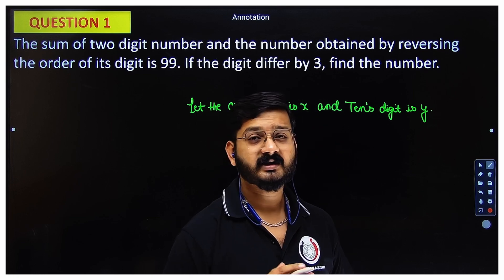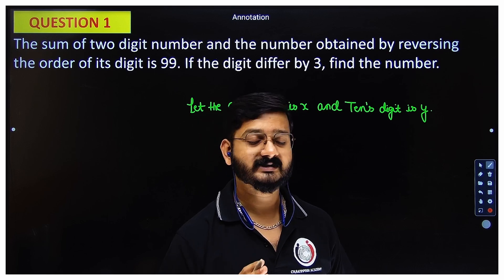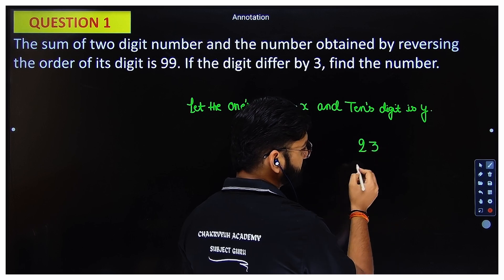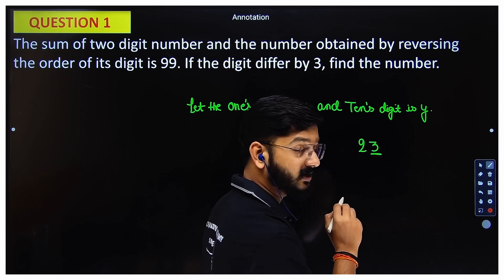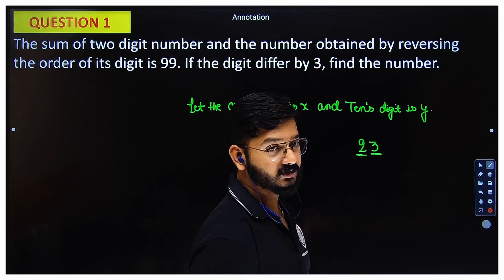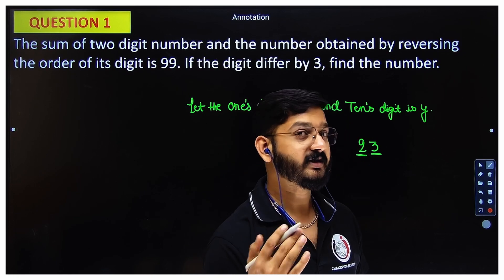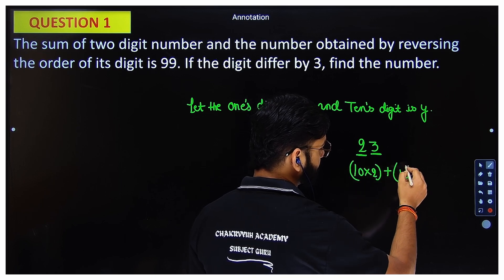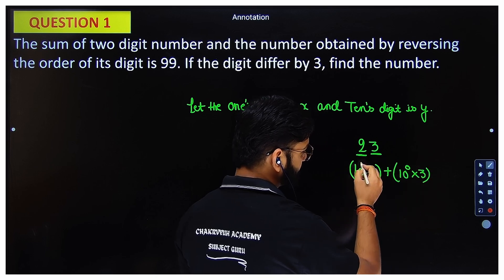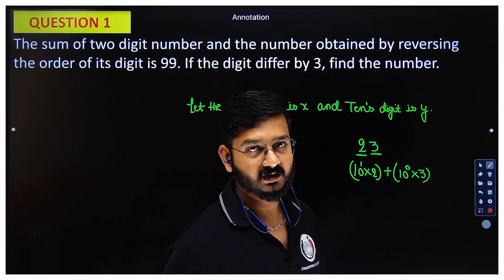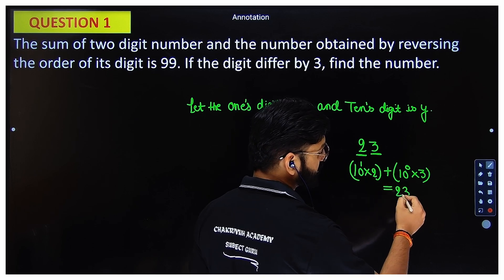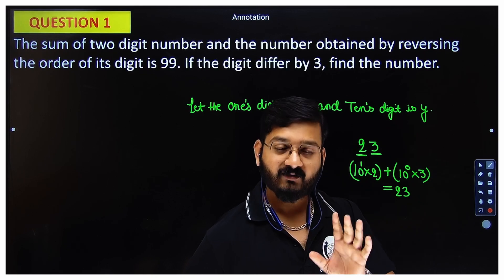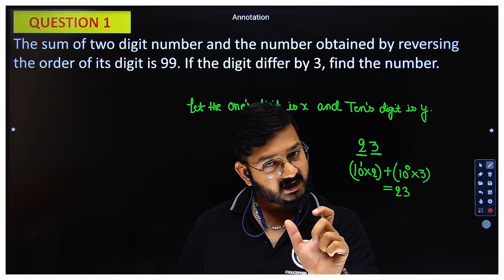If the one's digit is x and the ten's digit is y, the number will not be x times y or y times x — that is wrong. Let me explain why. Suppose you take the number 23. The digit at one's place is 3, and at ten's place is 2. You don't write 2 times 3. You get 23 as 10 to the power one times 2, plus 10 to the power zero times 3, which is 1. So you must multiply each digit by its place value.